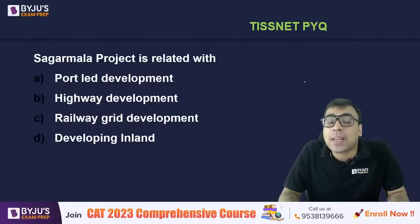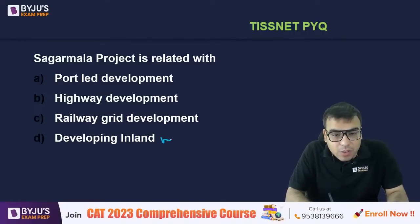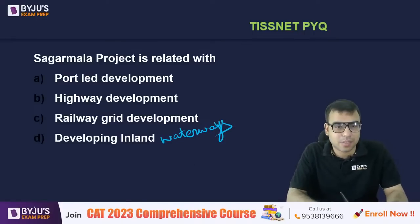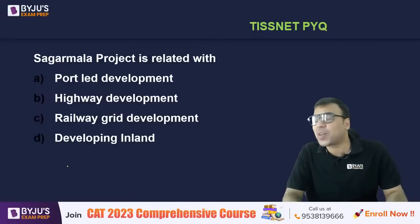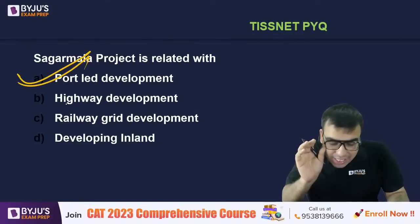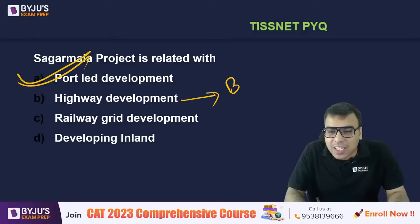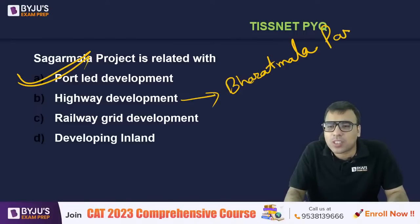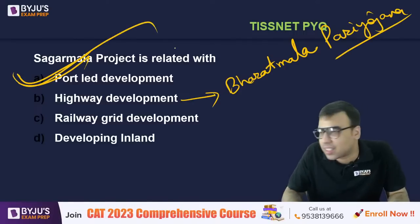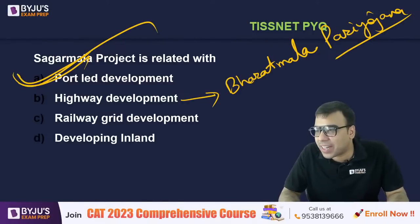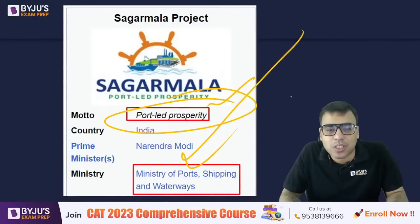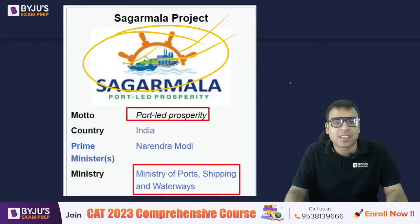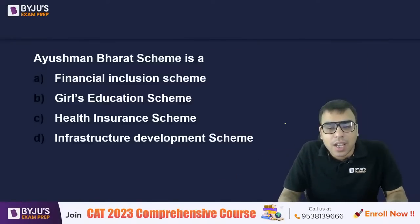Sagarmala Pariyojana is related with what? Options: port-led development, highway development, railway grid development, or developing inland waterways. The right answer is A — port-led development. Highway development is related to BharatMala Pariyojana. Sagarmala Pariyojana falls under the Ministry of Ports, Shipping and Waterways. If you know Hindi, 'Sagar' means sea/ocean, which gives a hint about the answer — port-led prosperity.